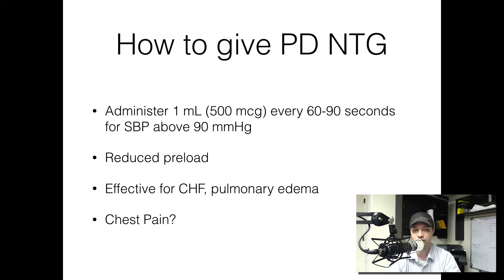This is going to be effective for CHF and pulmonary edema — it's going to help get all that fluid out of the lungs. There's even some data; there's a study from 1994 about using push-dose nitroglycerin for anginal chest pain, so that's something else to consider. When you're looking at your standard concentrations, you may have a different concentration than what I talked about today, but essentially you want to try and get about 500 micrograms per ml.